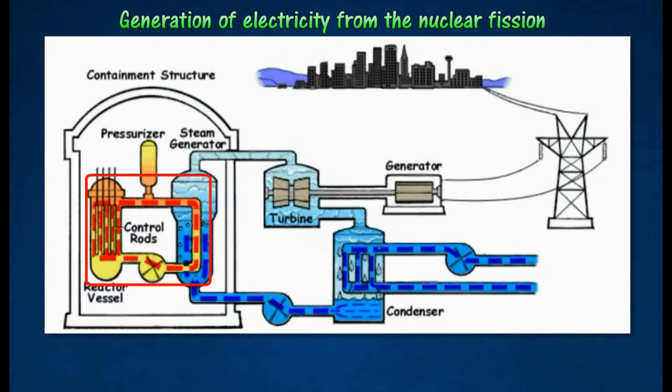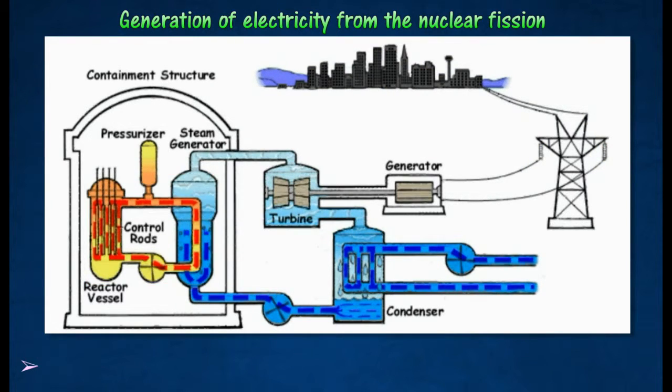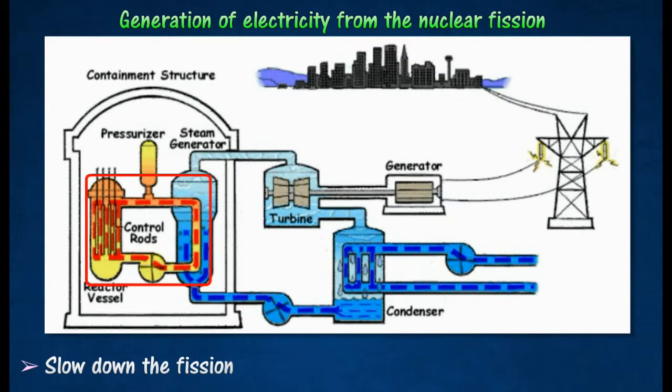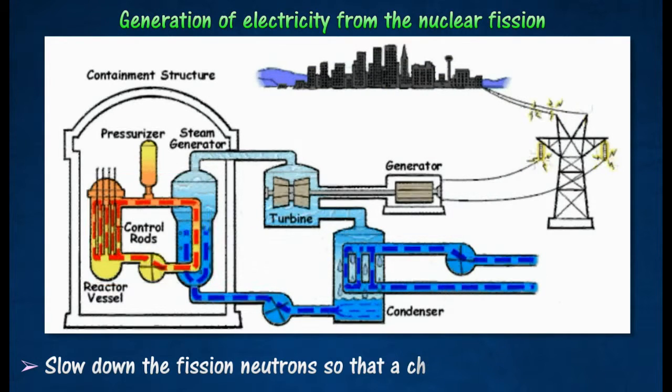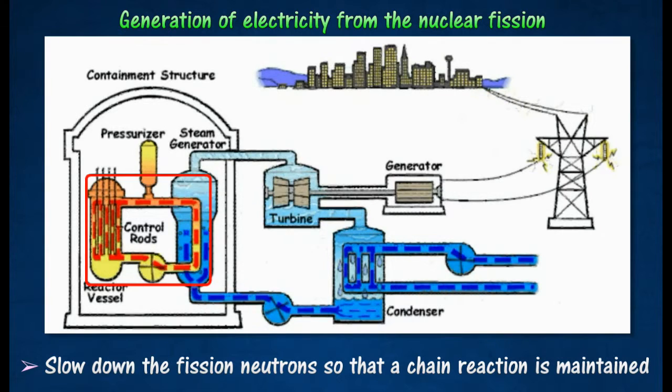Graphite is used as a moderator to slow down the fission neutrons so that a chain reaction is maintained.